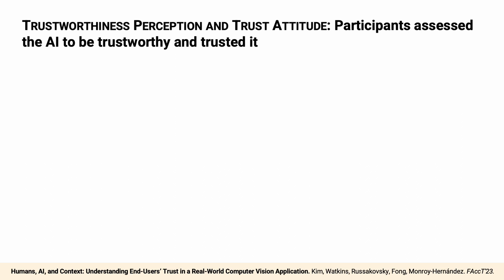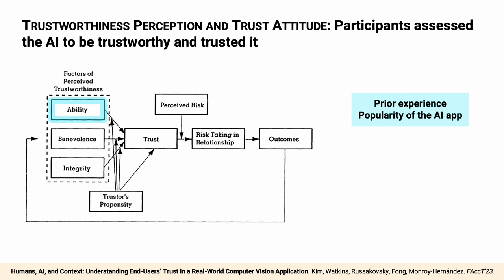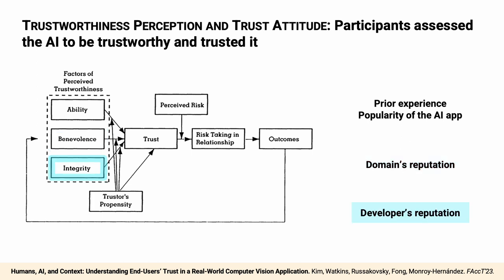Starting with trustworthiness perception and trust attitude, overall participants assessed the AI application to be trustworthy and trusted it. Participants assessed the app has ability based on their positive prior experience and the popularity of the app. They assessed the app has benevolence based on the reputation of the app's domain, birding — describing the birding community as a place where everyone tries to be accurate and do good. Finally, participants assessed the app has integrity based on the developer's reputation. Most participants knew the app was developed by the Cornell Lab of Ornithology, describing it as a respected institution with a long history of bird science and conservation efforts.